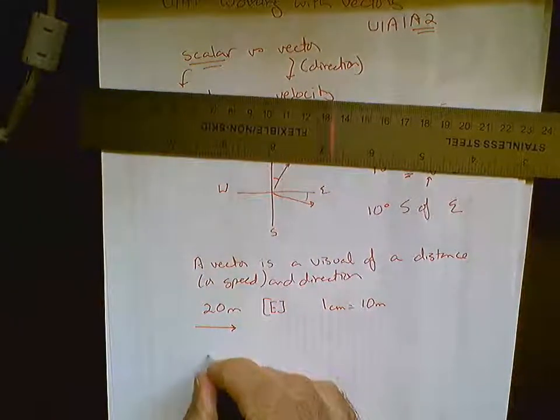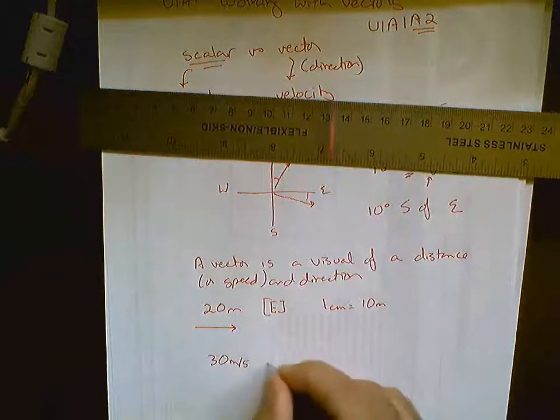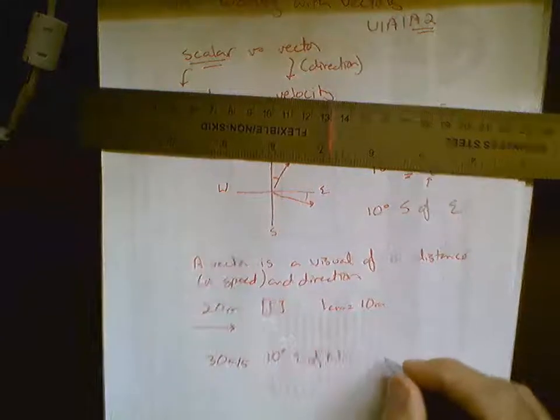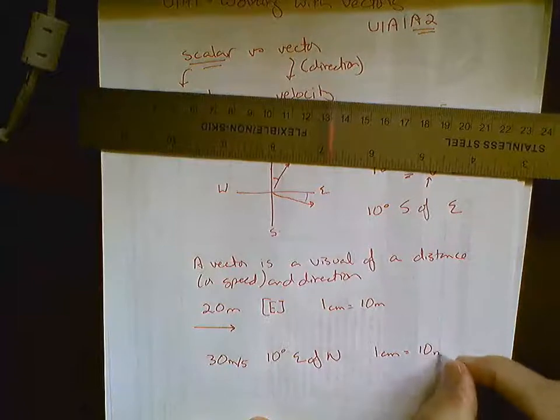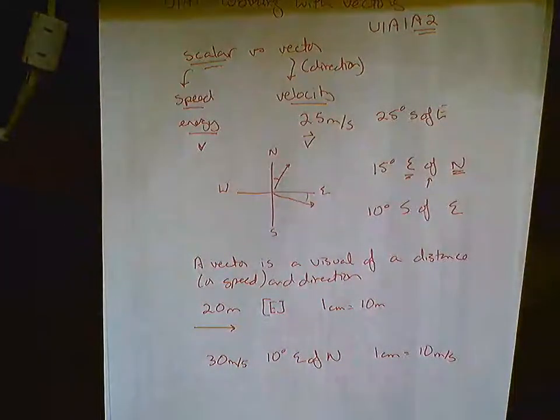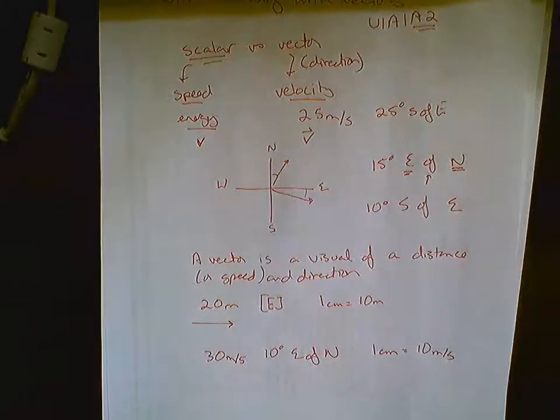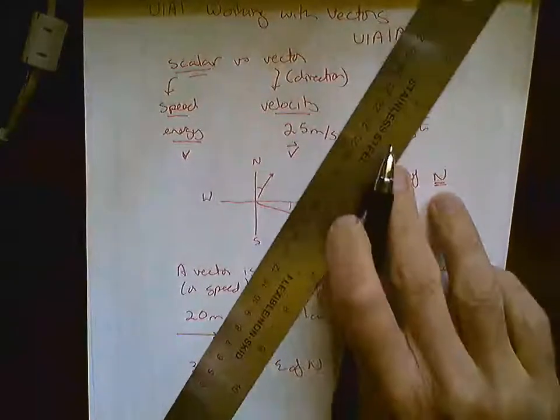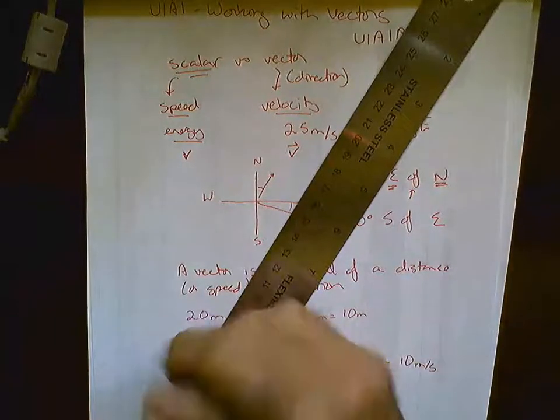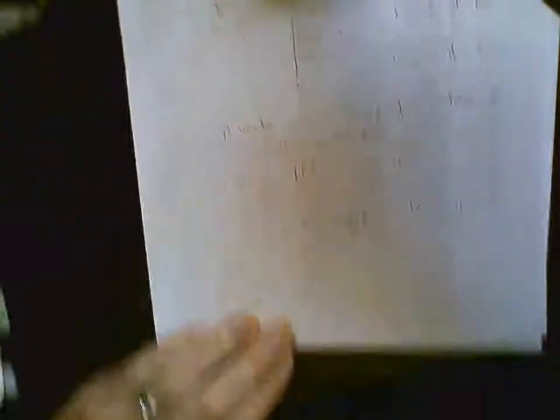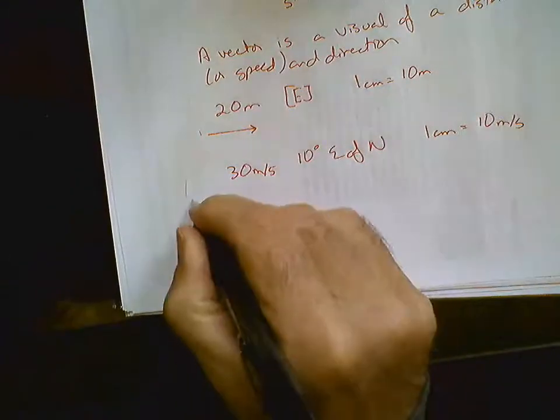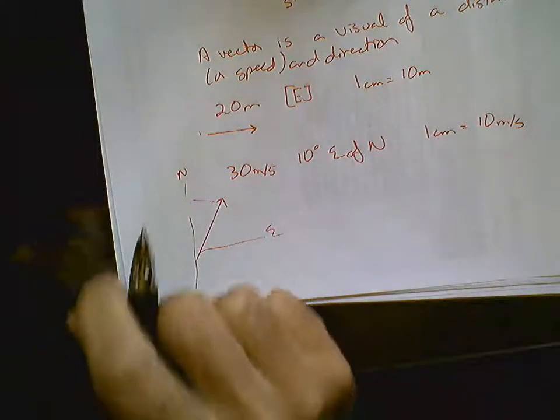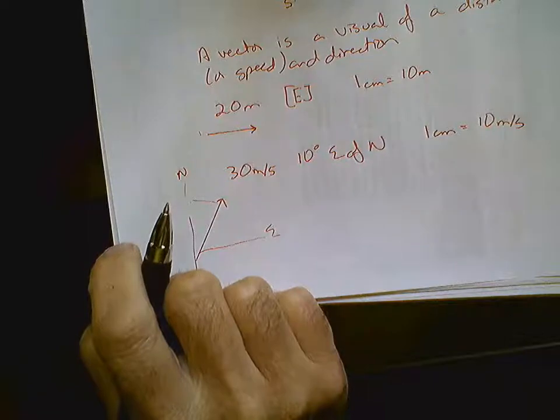I could also do, let's go 30 meters per second and let's go 10 degrees east of north. So, once again, I need a scale, so I'm going to say 1 centimeter equals 10 meters per second. So, it doesn't matter what we're looking at, whether we're looking at a distance or whether we're looking at a speed. All we need is a scale, so I'm going to need 3 centimeters here. And I'm going to approximate 10 degrees east of north. So, there would be my east. So, basically, that just tells you what vectors are and what they do.